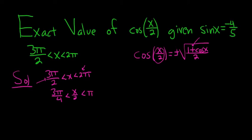So x over 2 is between 3 pi over 4 and pi. So here's pi and here's 3 pi over 4. So x over 2 is somewhere here in this little red region here.